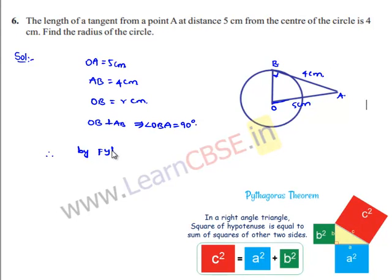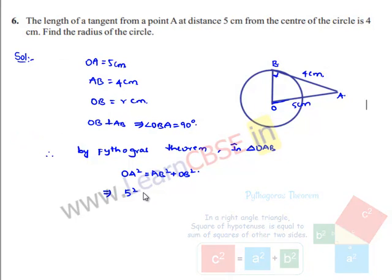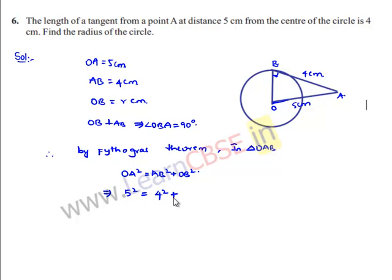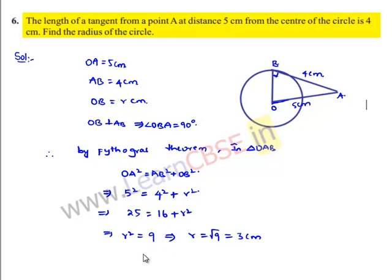That gives 25 = 16 + R², so R² = 25 − 16 = 9, therefore R = √9 = 3 cm. The radius of the circle is 3 cm.